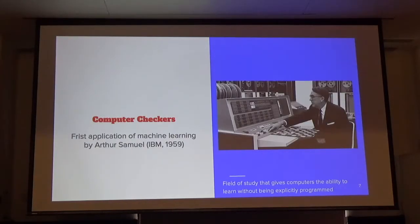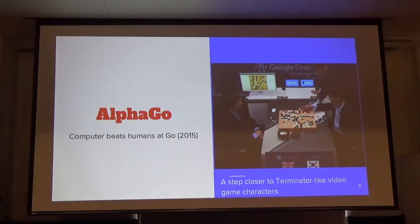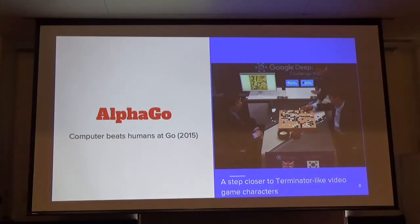The first application of machine learning was done by Arthur Samuel at IBM — he trained a computer to play checkers. Google created AlphaGo, which beat a human at Go. If you put a chess board on every atom in the universe, Go would have more combinations of moves than the total of all those chess boards. So training a computer to beat a human at Go moves us closer to more complex AI that can process very, very complex situations.